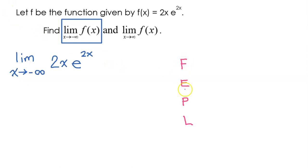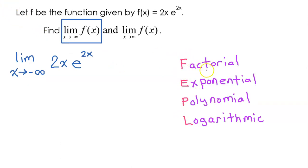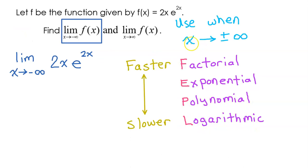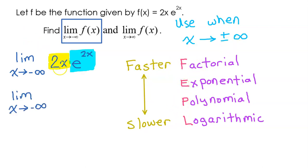In Unit 1, we learned an acronym called FEPL, which stands for factorial, exponential, polynomial, and logarithmic. We can use FEPL when x is approaching positive or negative infinity. It ranks functions in order of how fast they grow — functions towards the top grow faster, and ones towards the bottom grow slower. We can view f(x) as a polynomial function times an exponential function. To use FEPL, we need to rewrite this as a fraction by dropping the exponential part to the denominator as e to the negative 2x.